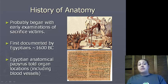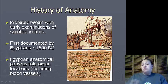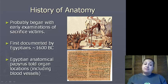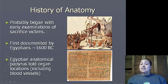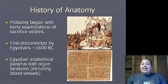History of Anatomy. It probably began with the examination of human sacrifices and animal sacrifices. You tended to pull out certain organs and had to observe them, or look at the severed head. It was first documented by the Egyptians in 1600 BC. They had an anatomical papyrus that showed where certain organs were and even went into detail about blood vessels.